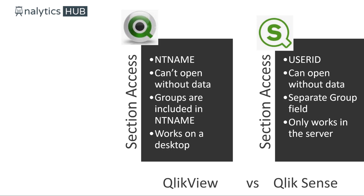One more subtle point: if you're a QlikView developer, you know that you have to set document properties and set a strict exclusion option in case a user trying to get access is not in the Section Access control table. In Qlik Sense, if a user is not listed in the Section Access control table, that user will not get access to the document. Qlik Sense has strict exclusion implicitly included in the product, which is good news.